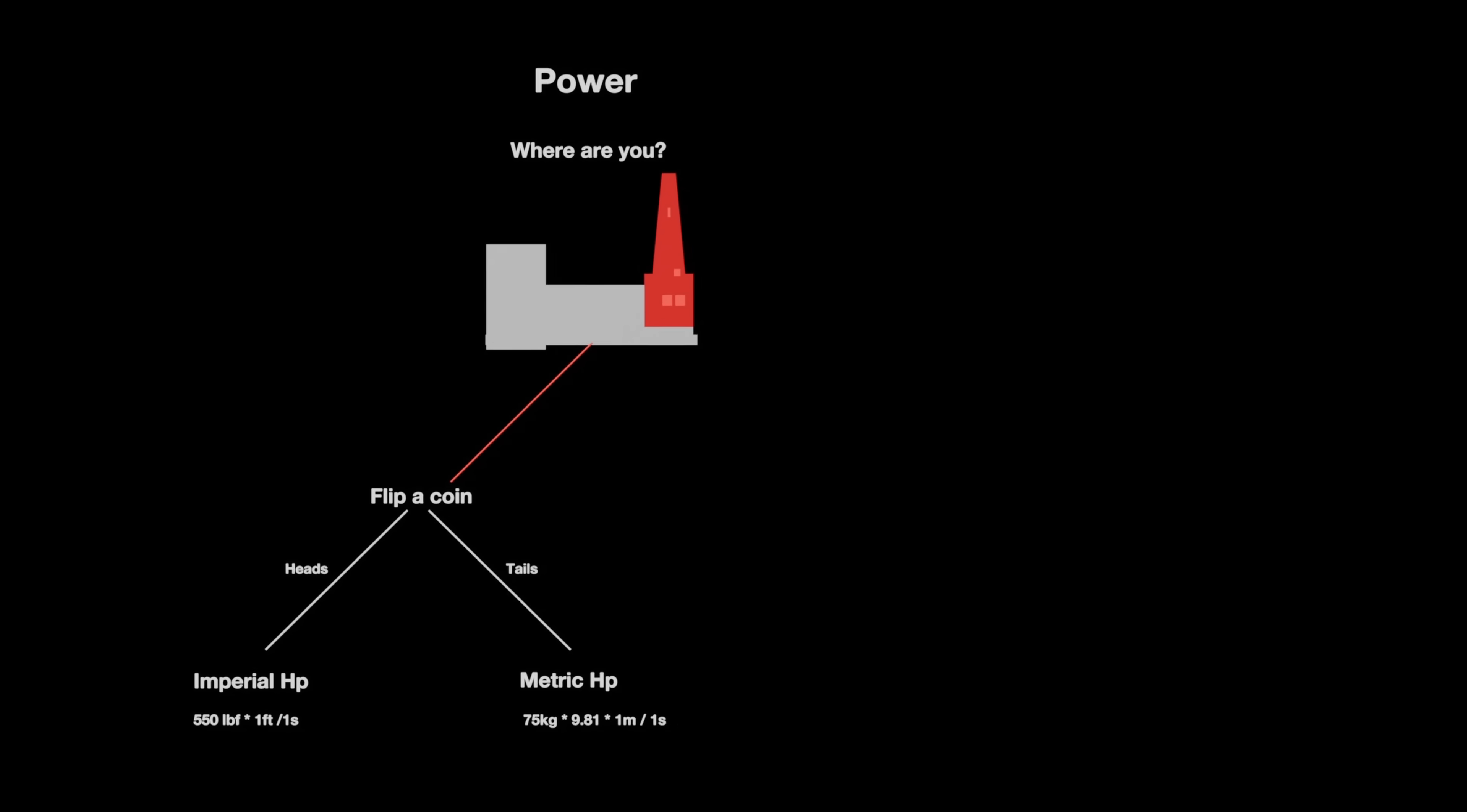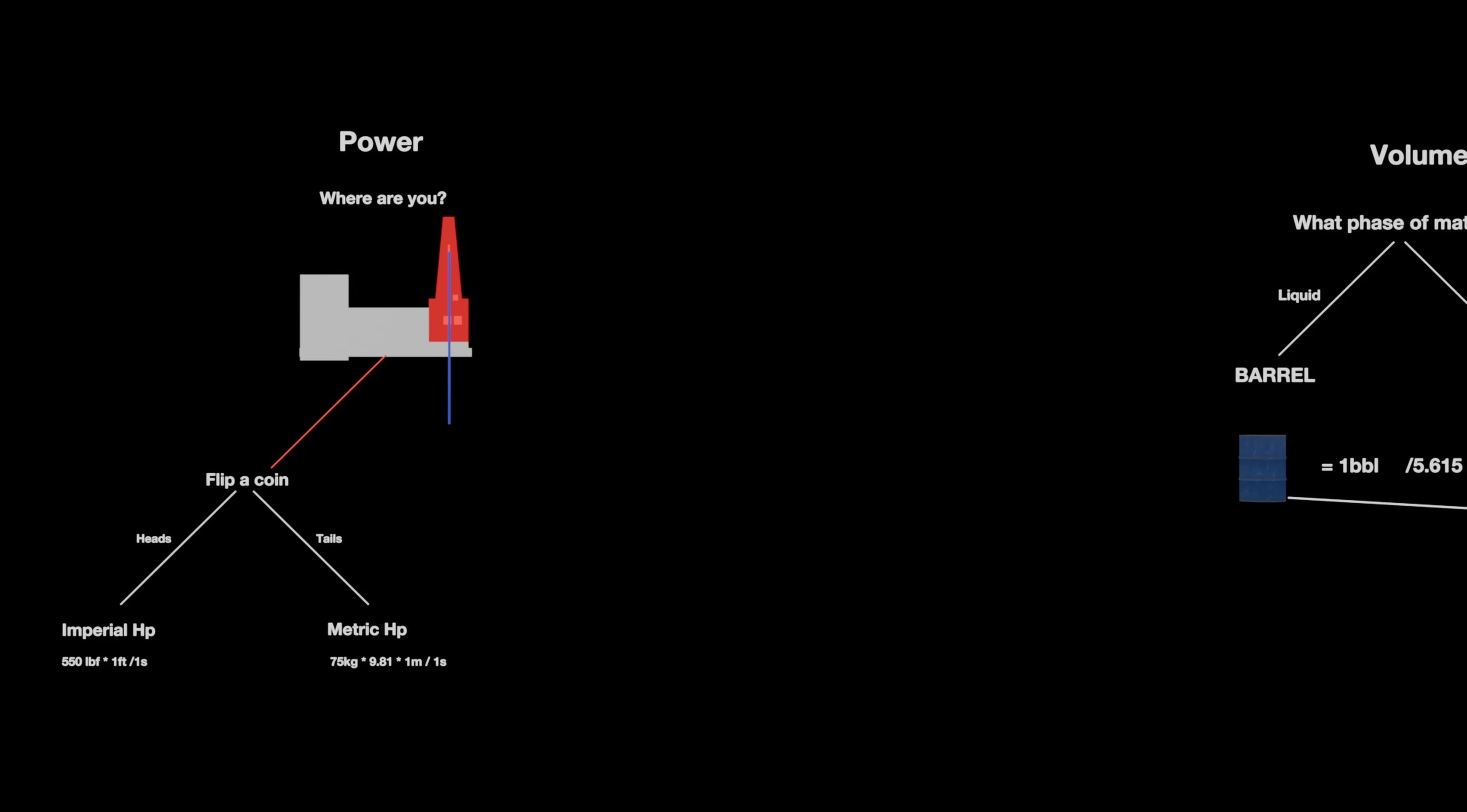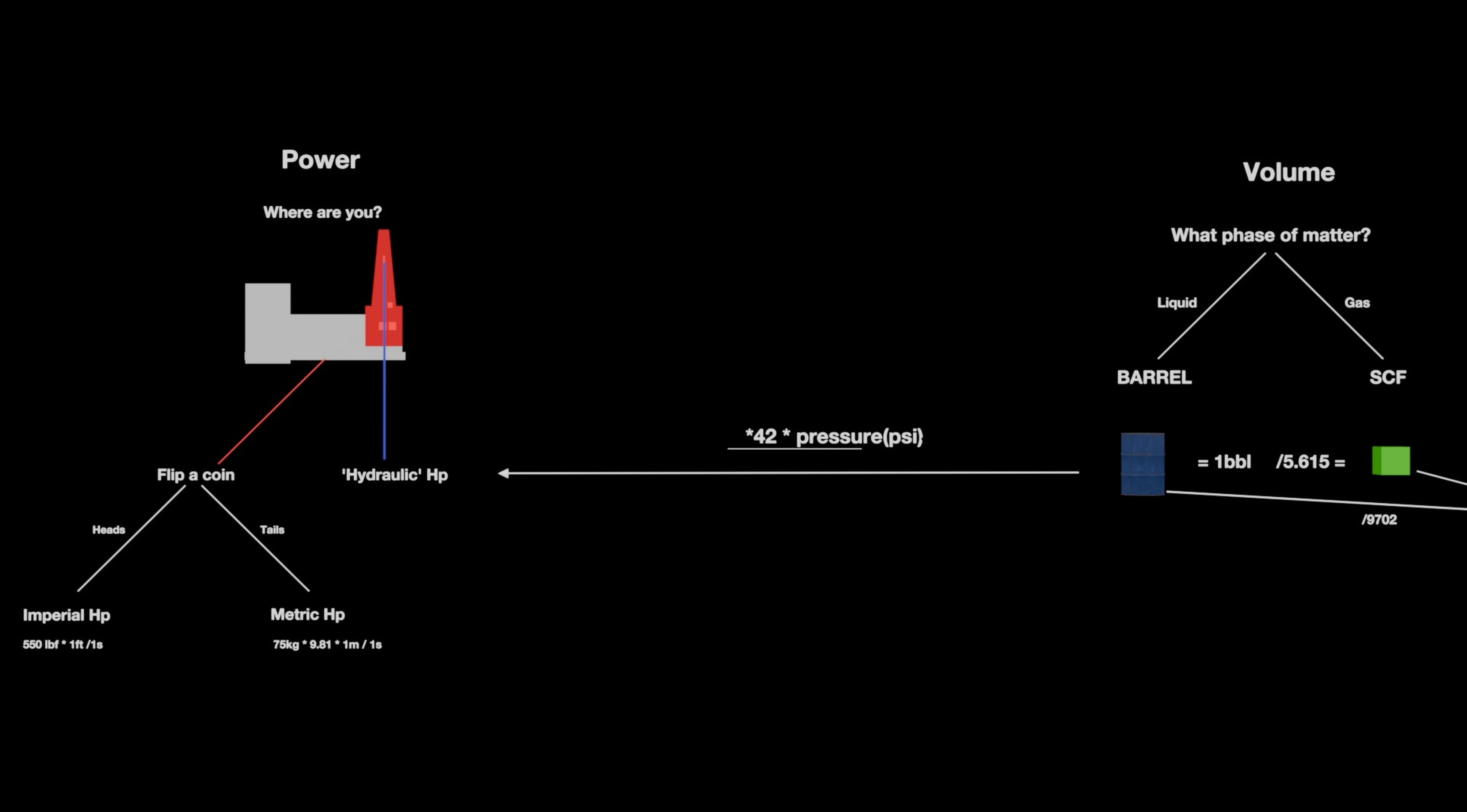But what about the fluid pumped by the mud pumps? How much horsepower does that provide to, say, a downhole mud motor? If we were using SI units, we'd simply get the answer in watts by multiplying the pressure by the flow rate. In the wacky world of oil field units, we have to take the flow rate, which absolutely everyone expresses in barrels, convert it to gallons. And remember, those are US gallons. Then we multiply it by the pressure in PSI and divide it by 1,714.